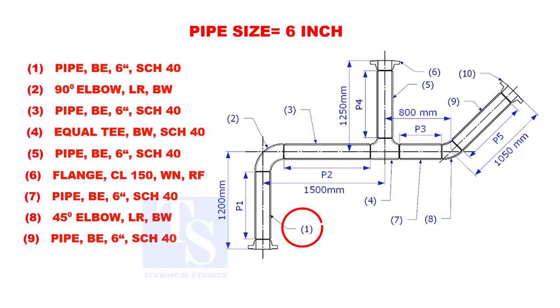Let us calculate the length of pipe 1. To calculate the length of pipe 1, we need to reduce the flange height and the elbow center from the measurement 1200 millimeters.